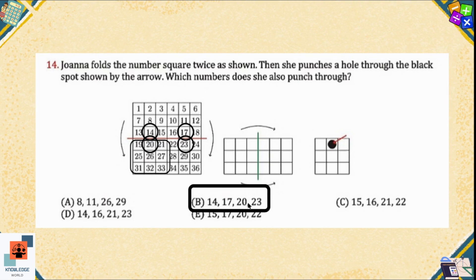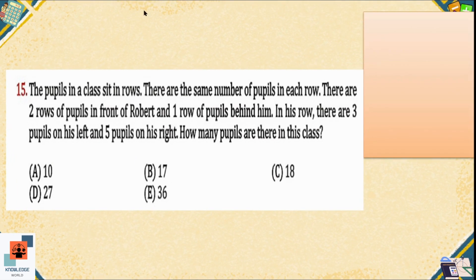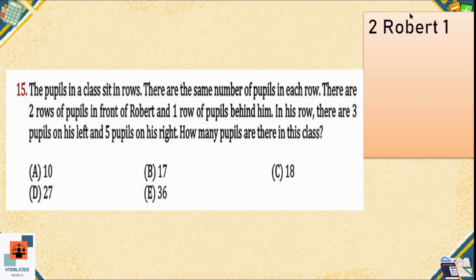Question 15: The pupils in a class sit in rows following certain rules. There are the same number of pupils in each row. There are two rows of pupils in front of Robert and one row of pupils behind him, meaning Robert is sitting in the third row and one row is after him — so there are four rows in total. In his row, there are three pupils on his left and five pupils on his right.